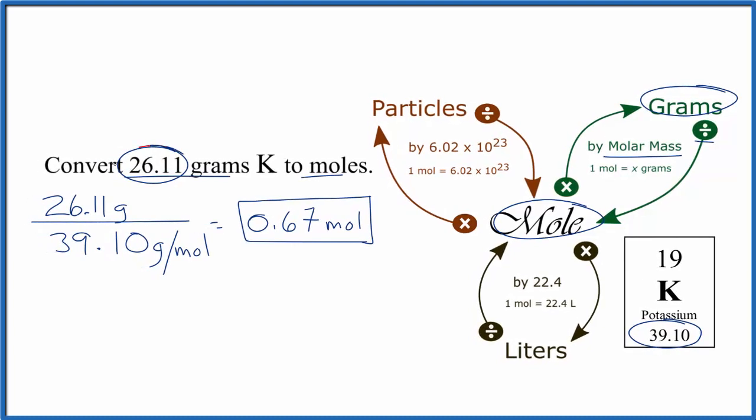So we take what we're given, the 26.11 grams, and we're going to divide that by the molar mass, in this case the atomic mass of potassium, 39.10, and the units are grams per mole.